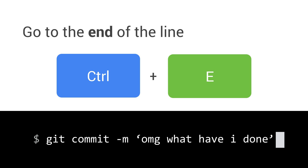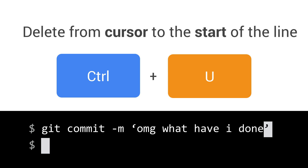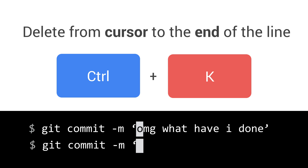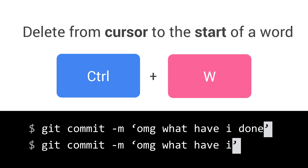To delete everything, Ctrl+U will clear out the whole line — that's nice. You've also got Ctrl+K, which deletes from the current cursor position to the end of the line, and Ctrl+W, which deletes from the cursor back to the beginning of the current word. There are a ton of different shortcuts out there.